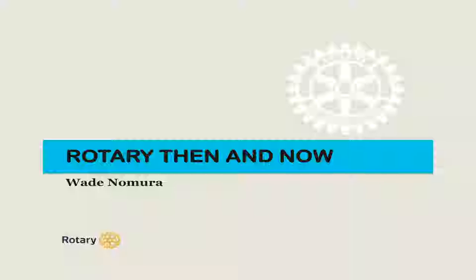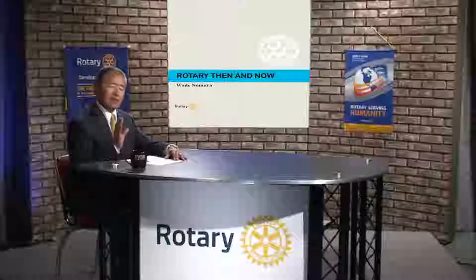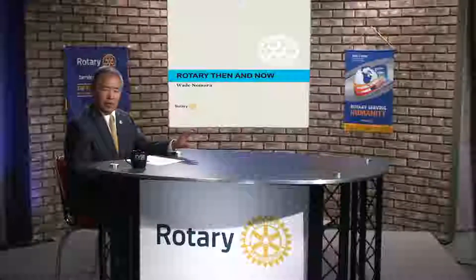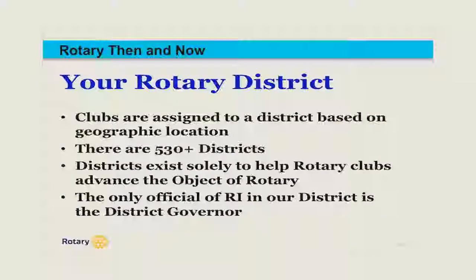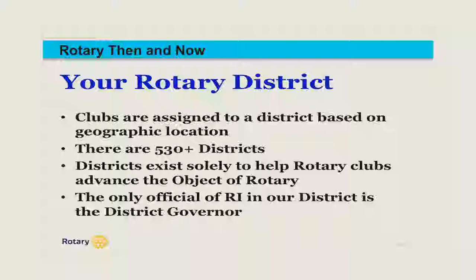The first slide is what we call Rotary then and now, covering what the history was like and what it has become. The first part we look at is your Rotary district. Rotary districts are made up of clubs in a specific geographical area, and there are 534 Rotary districts worldwide, covering over 200 countries and geographical regions. Each Rotary district is represented at Rotary International by the sitting district governor.